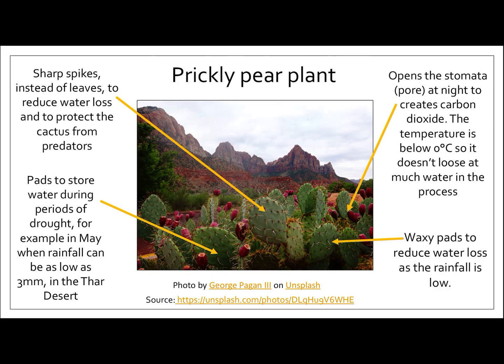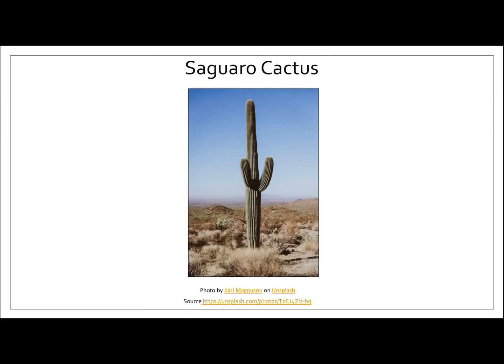Finally, this plant has got waxy pads to reduce water loss, as the rainfall is low. So when describing and explaining plant adaptations, if we can say what the plant has got to help it adapt, we can then explain why that helps the plant to continue to grow and survive. And if we can link it to the climate, that's a really good explanation as to how plants have adapted.